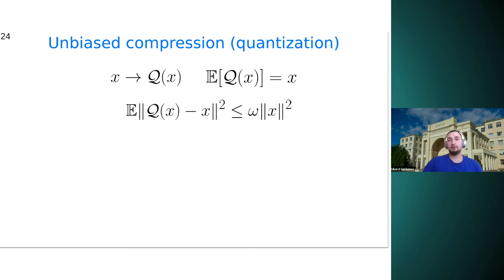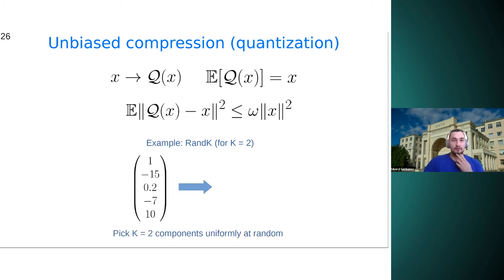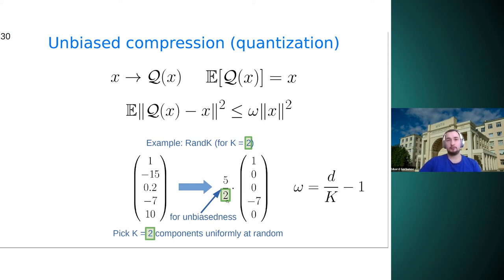For example, one can consider a rand-K operator where K components are picked uniformly at random. And here we consider five dimensional vector. And for example, we can randomly pick, for example, the first and the fourth component. And also we need this multiplicative factor to make the resulting vector an unbiased estimate of the initial one. So here the denominator of two is number of picked components. And here we have the dimension of the problem five. So in general, here we will have D over K. And in general, one can show that a rand-K operator satisfies this definition with the following omega.